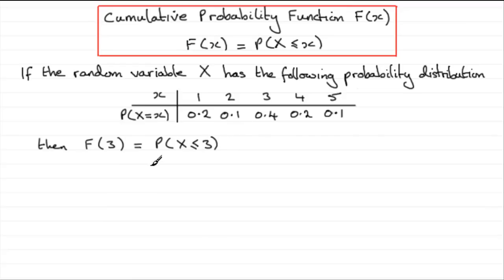And clearly that's going to be equal to getting 3, getting 2 or getting 1. So it's going to be 0.2 plus 0.1 plus 0.4. And what does that come to? Well that comes to 0.7.